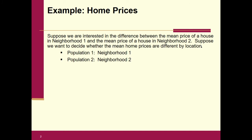So we have our two populations. When you do a paired t-test or a two-sample t-test, or really if you're looking at any multiple populations, it really doesn't matter what you call population one or population two. Right now we're calling neighborhood one population one, and neighborhood two population number two. You could flip those and it doesn't matter — you're going to get the same answer.